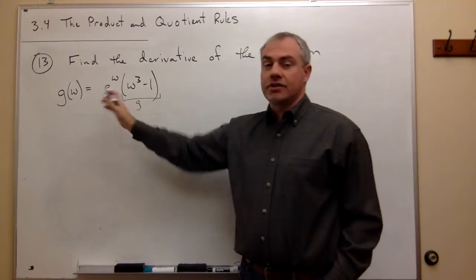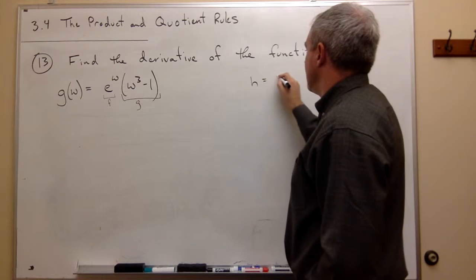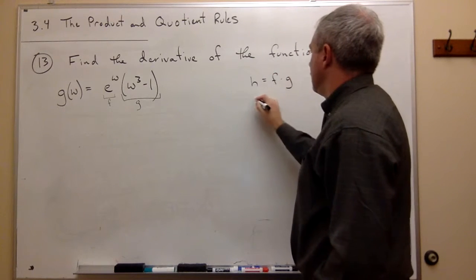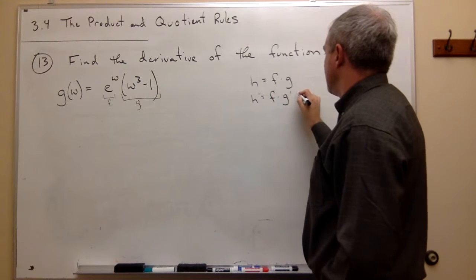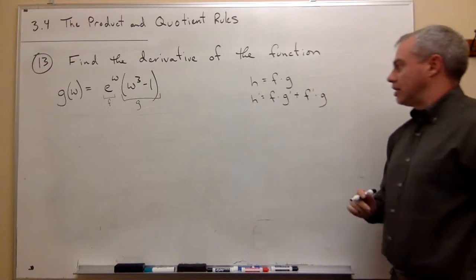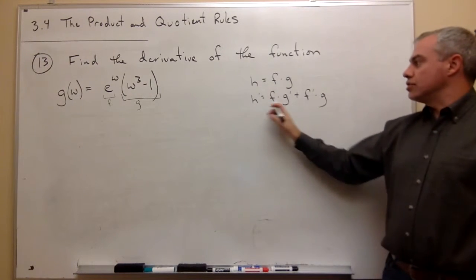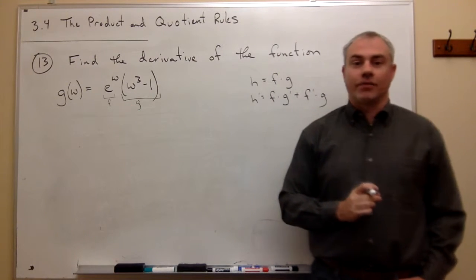I have the product of two functions, and the product rule says if some function h is f times g, then h prime is f times g prime plus f prime times g. So I just need to use the product rule to take the derivative of my function g of w.